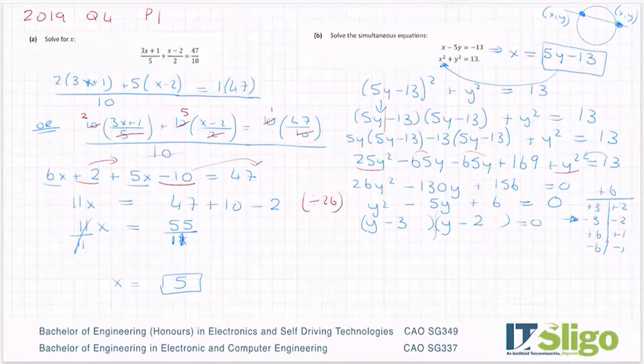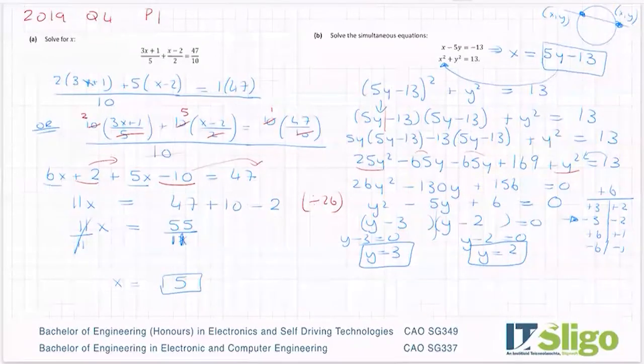So that's equal to zero. So (y - 3), you can split them, (y - 3) = 0, so y = 3. (y - 2) = 0, so y = 2. So there's your two y values. You're not finished yet, because you have to find your corresponding x's. So again, just like any other simultaneous, I could sub them into either equation, or this one, which is just the first equation changed around. So this one here is actually the easiest one to sub them into.